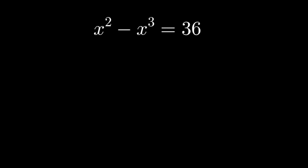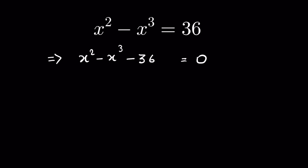x² minus x³ is equal to 36. We have to find the value of x. So we send 36 to the right hand side: x² minus x³ minus 36 is equal to 0, or we can write it as x² minus x³ minus 27 minus 9 is equal to 0.